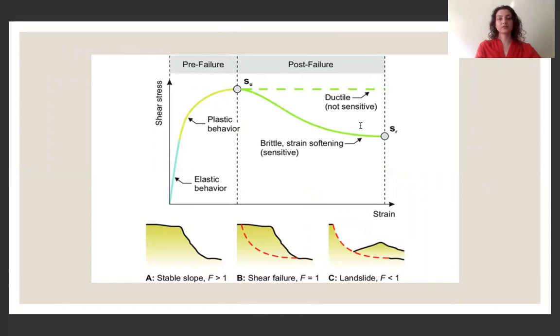And this is just a nice diagram to summarize the relationship between shear stress and shear strain and the different stages pre and post slope failure. So as you can see, it starts up with elastic behavior becomes more plastic in its behavioral properties. And then eventually goes into the post failure stage.